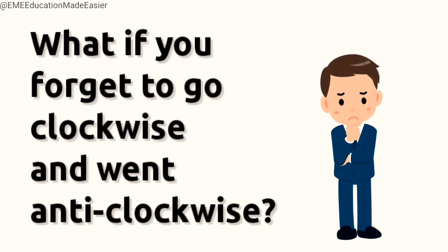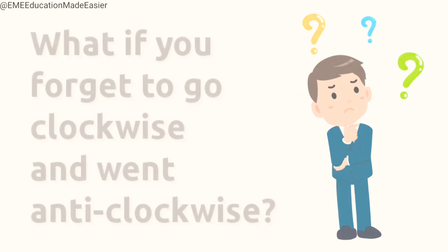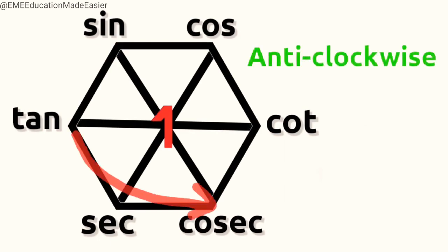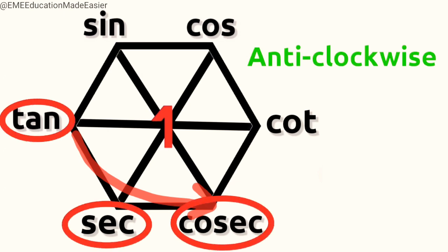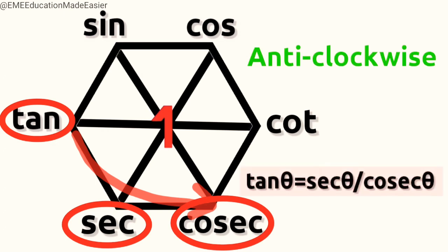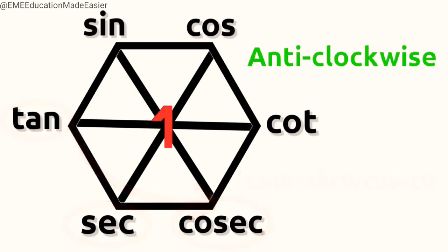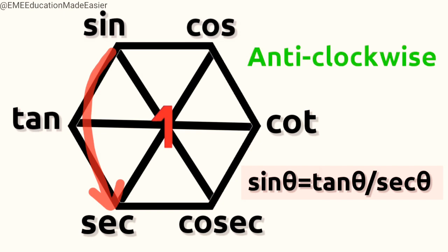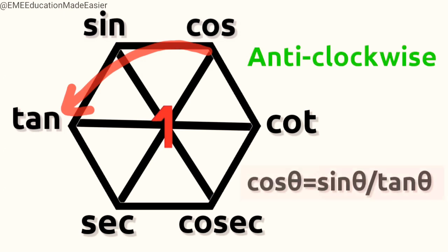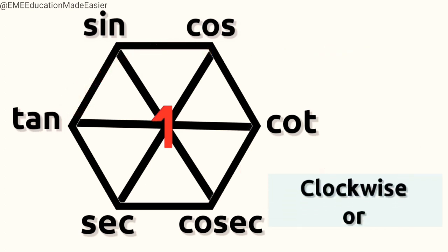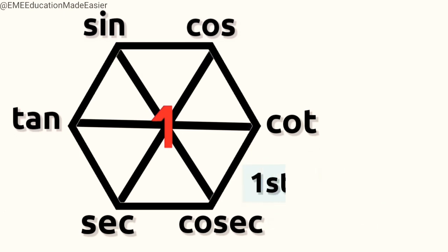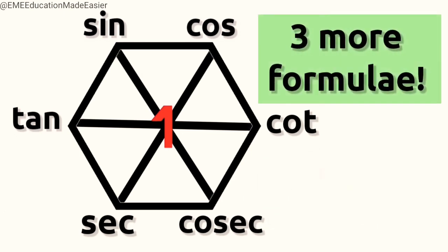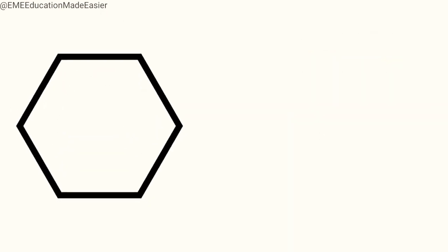What if you forget and go anti-clockwise instead? Don't worry — the pattern still remains the same. First equals second by third. Going anti-clockwise: tan theta equals sec theta by cos theta, and sin theta equals tan theta by cos theta. The list goes on whether you go clockwise or anti-clockwise. First will always equal second by third. You can easily get three more formulae this way. One simple hexagon and twelve formulae.